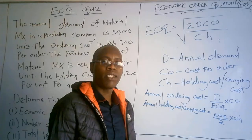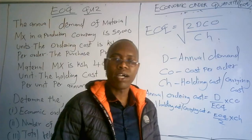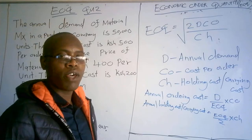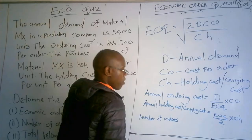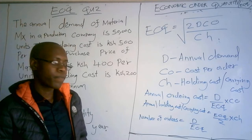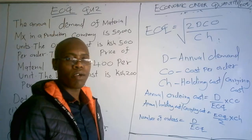Another question they can ask is to calculate the number of orders made in a year. The formula for the number of orders is D over EOQ — you take the annual demand and divide by the economic order quantity. That gives you the number of orders made in that particular year.